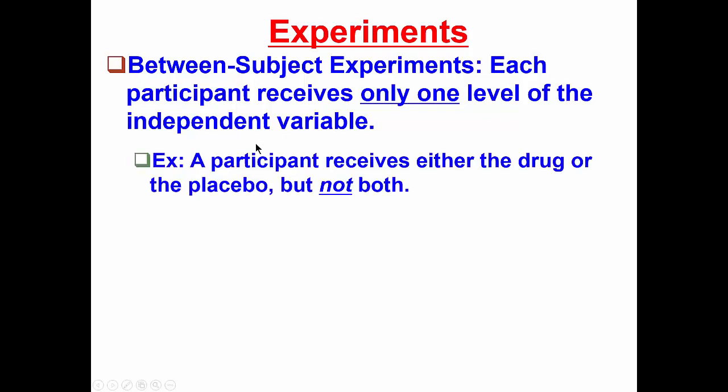Let's take an example. A participant might receive either the drug or the placebo, but not both. It's one or the other.